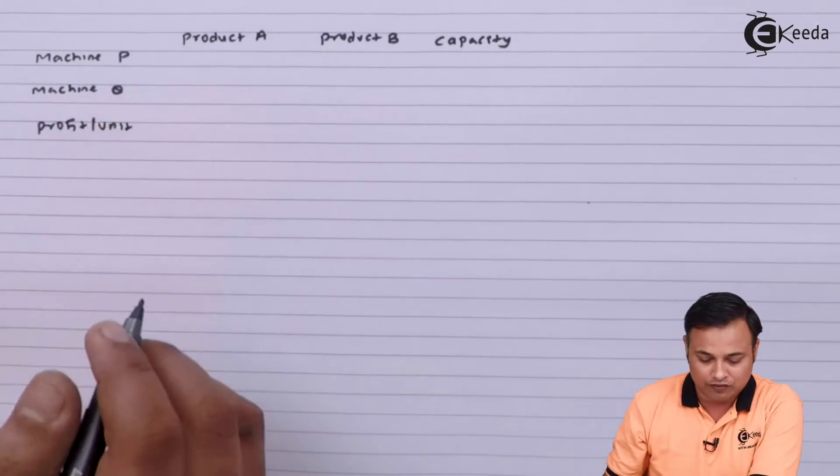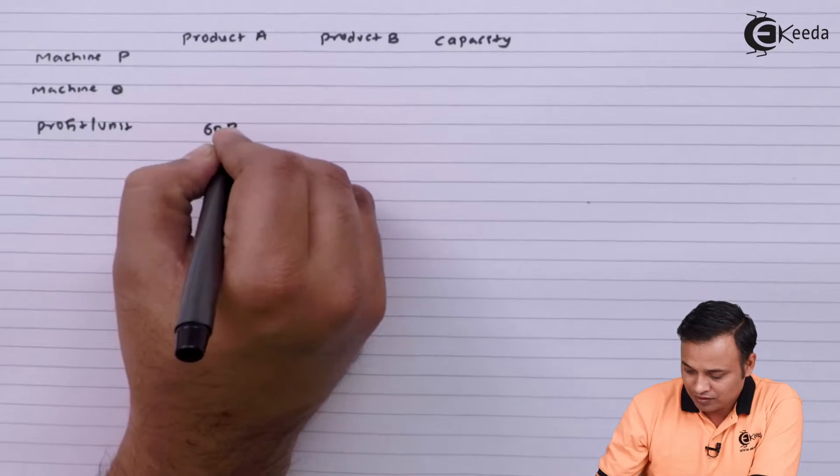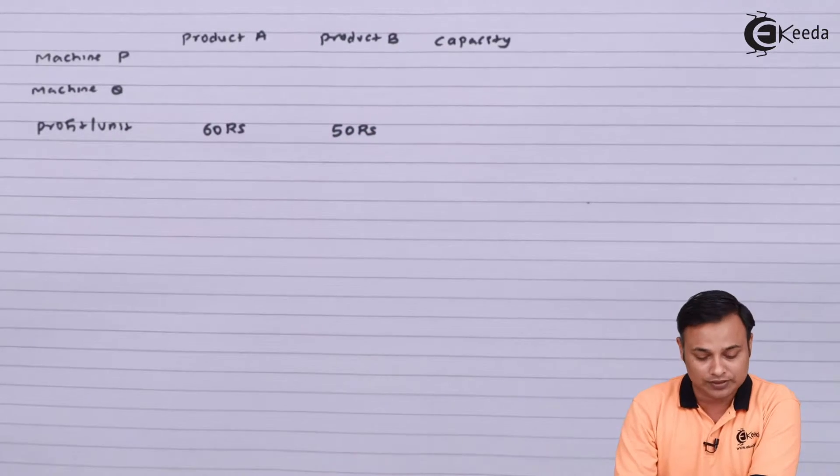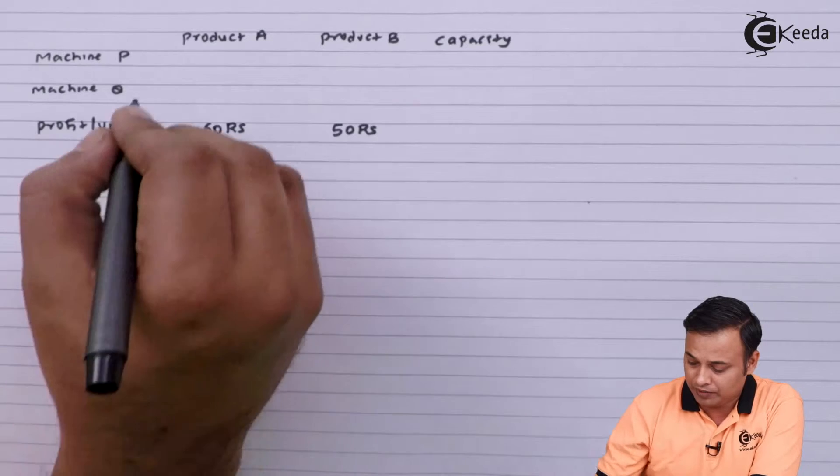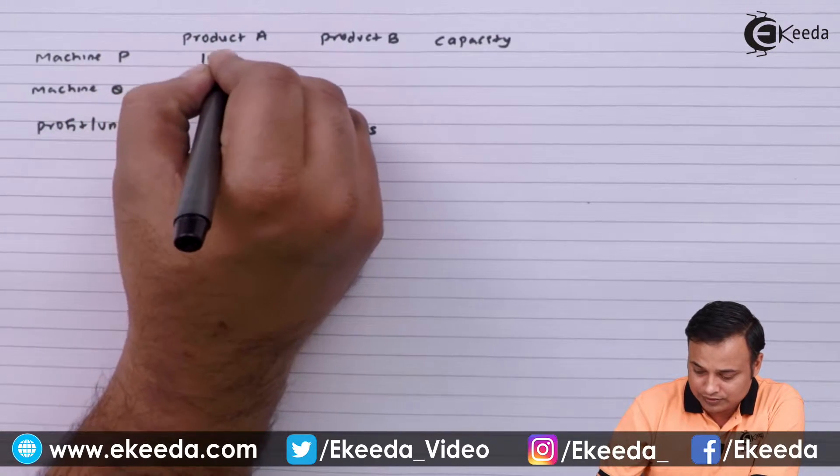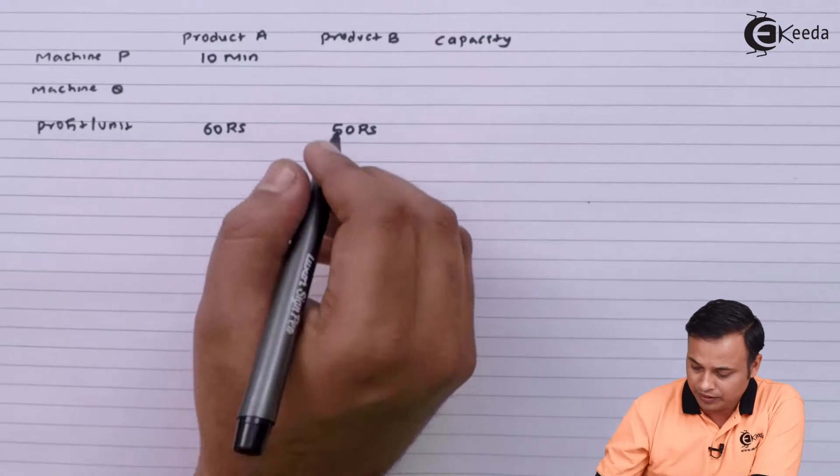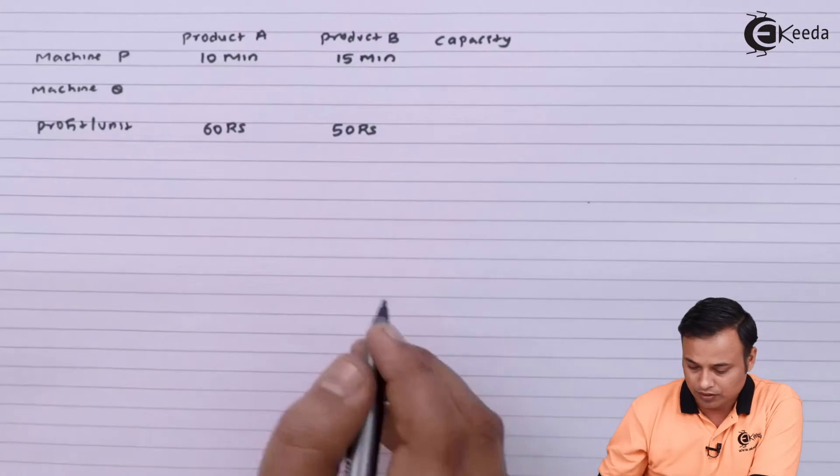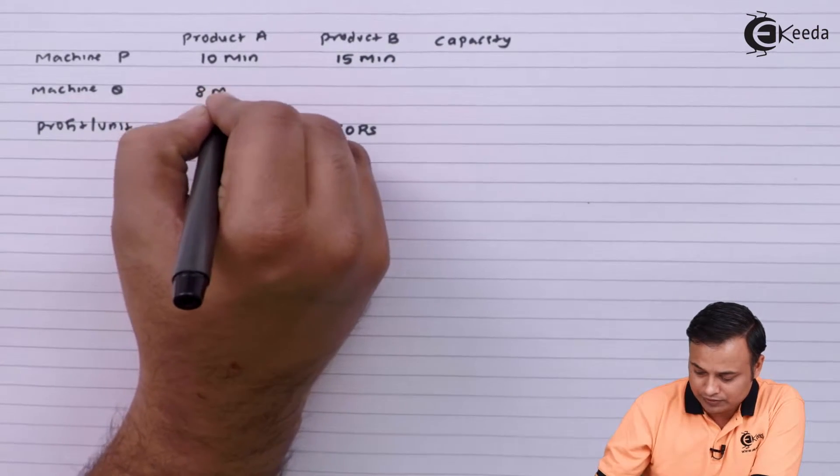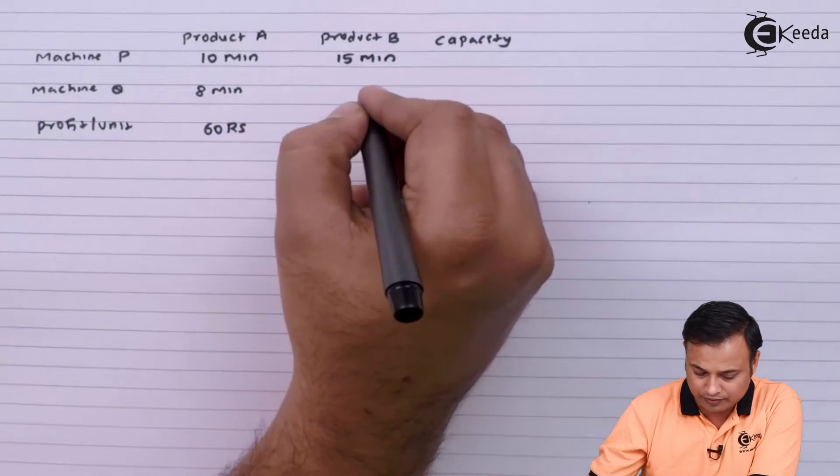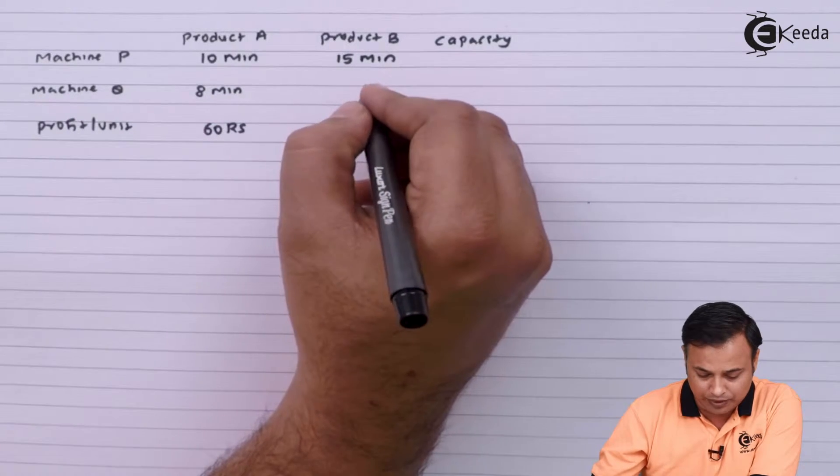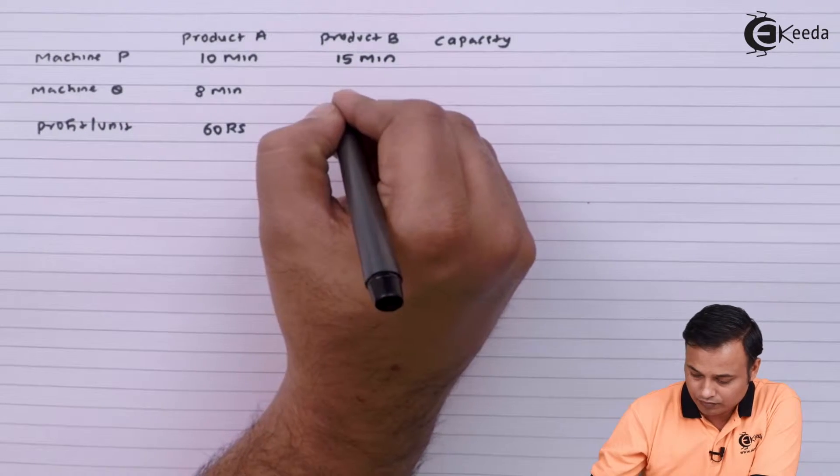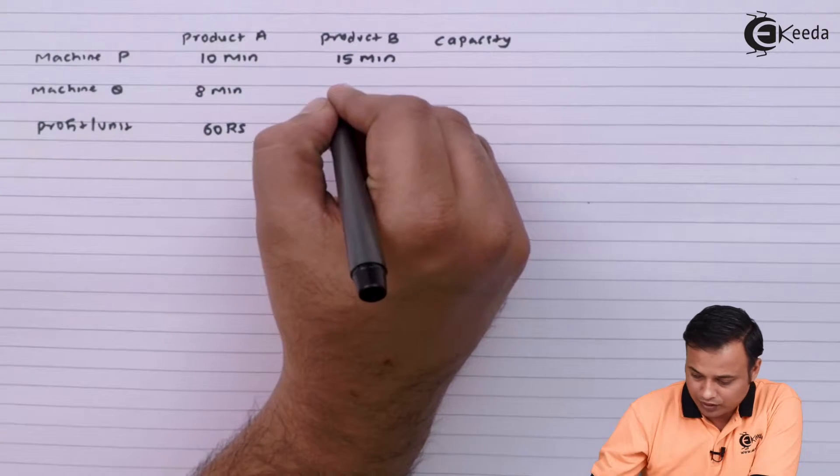Profit per unit: For A the profit is 60 rupees, for B the profit is 50 rupees. For machine P, product A takes 10 minutes. For product B it takes 15 minutes. For machine Q it is 8 minutes, and on product B it is 10 minutes.